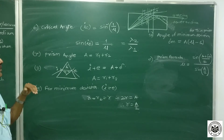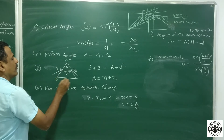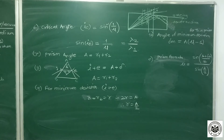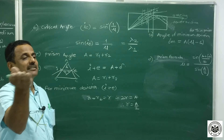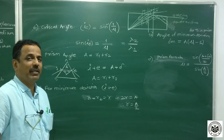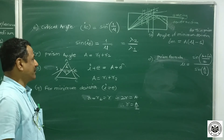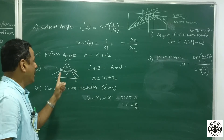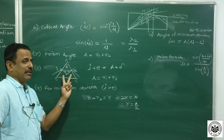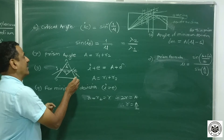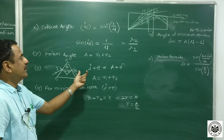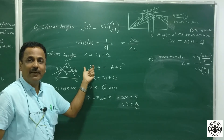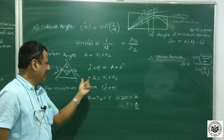Now moving to the prism ABC, where A is the angle of the prism. The angle of prism is not necessarily always the apex angle — it is the angle between the two surfaces through which refraction takes place. There is one incident ray and one emergent ray. The angle between those two refracting surfaces is the angle of prism A. The key relation is A equals r1 plus r2, where r1 and r2 are the angles of refraction inside the prism. The important formula is: i plus e equals A plus delta.